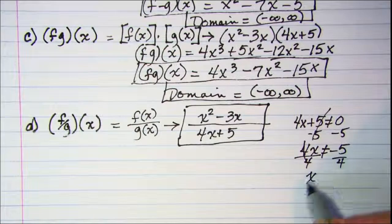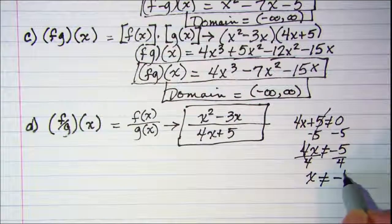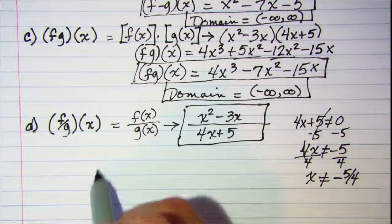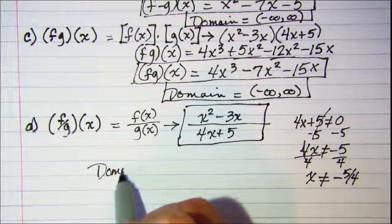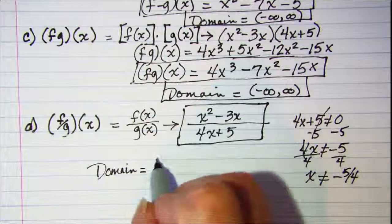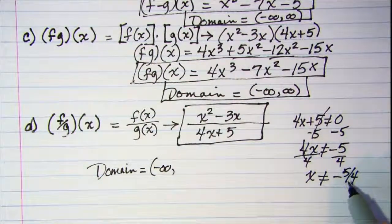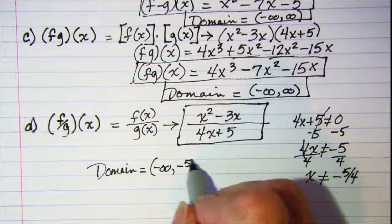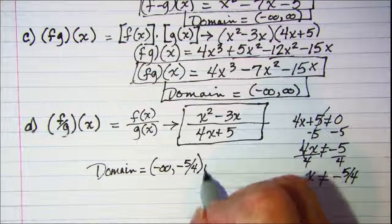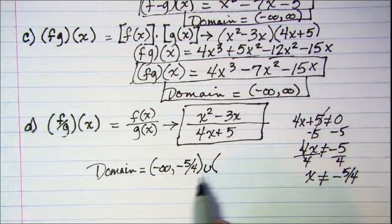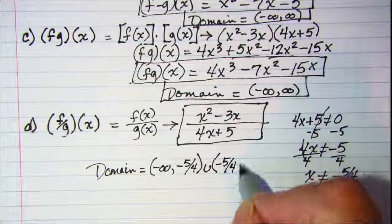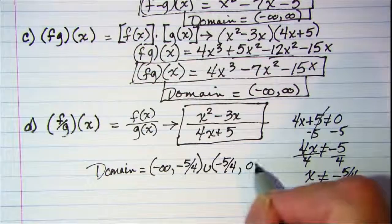And x cannot equal a negative 5 fourths. So our domain then showing that in interval notation is from negative infinity to negative 5 fourths, and we're not including that negative 5 fourths, union with and then we're going to pick up on the other side of negative 5 fourths and include all real numbers up to positive infinity.